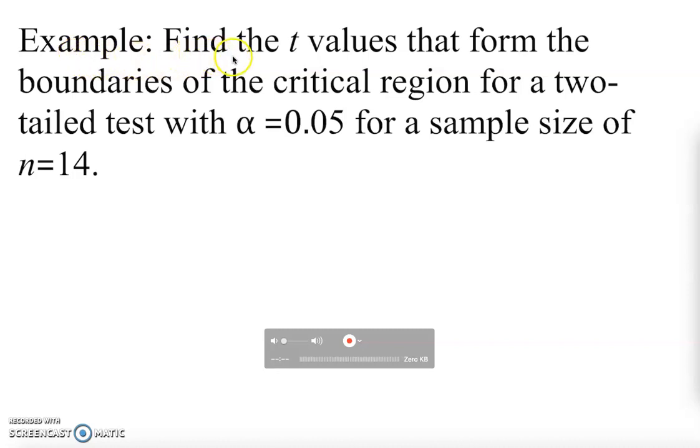Okay, this example asks us to find the critical value that forms the boundaries of the critical region for a two-tailed test with alpha equals 0.05, which is the alpha level or significance level, for a sample size of 14.